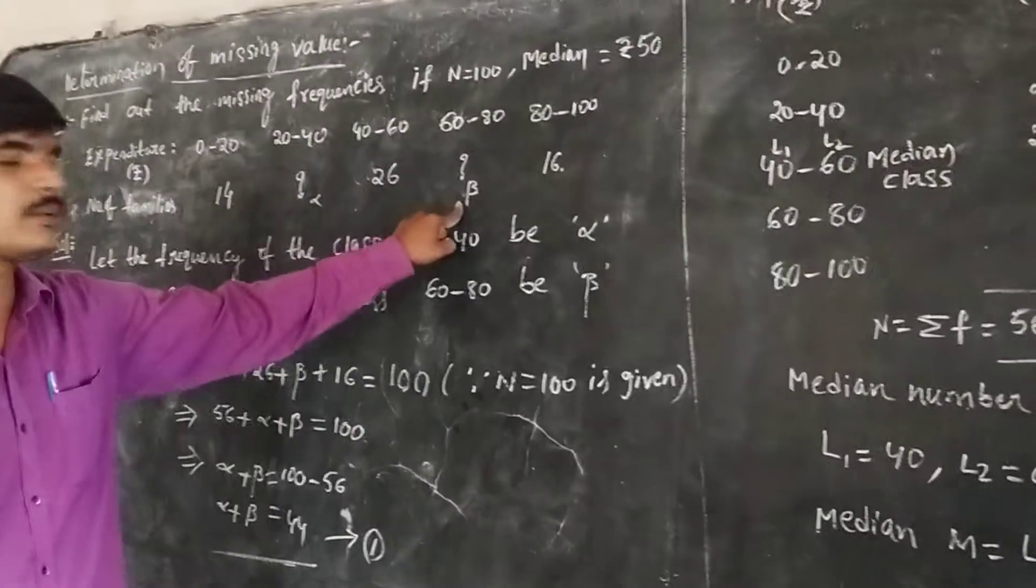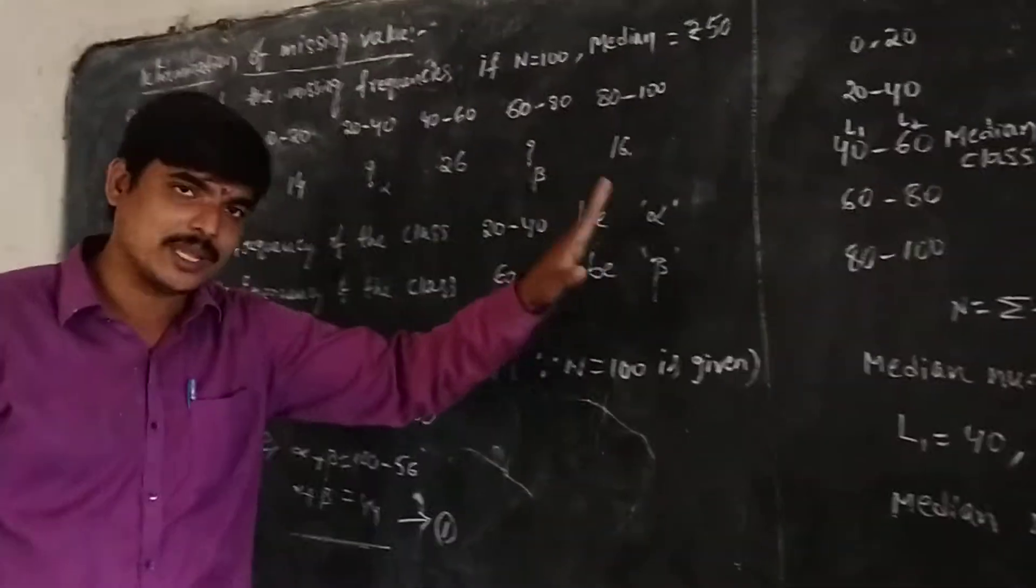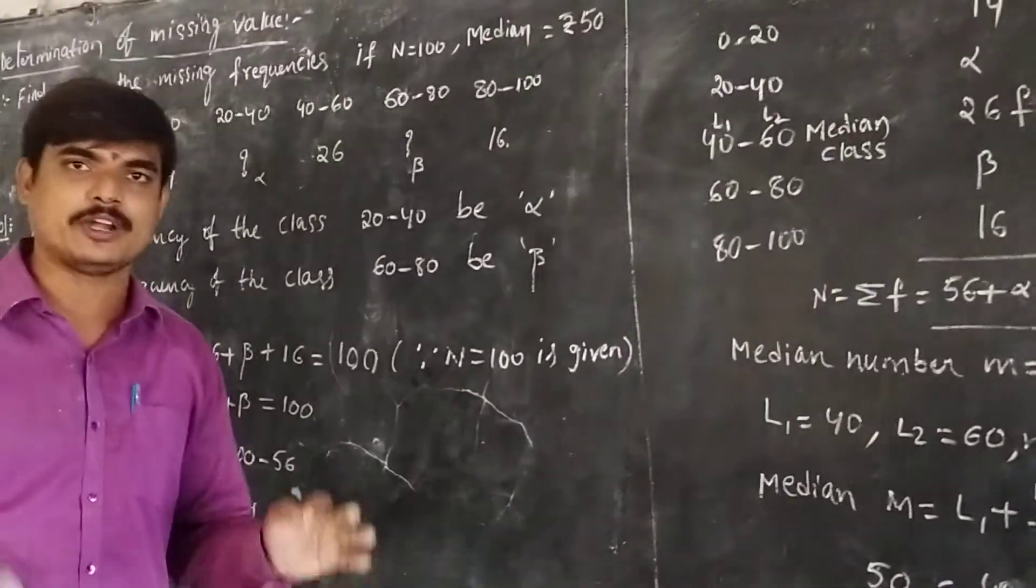That means the value of alpha equals 23 and beta equals 21. This is a very important problem from an examination point of view.